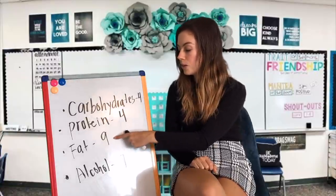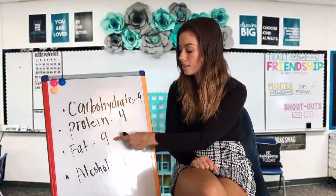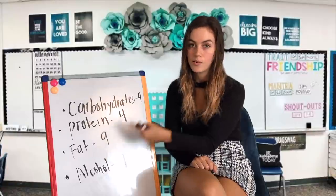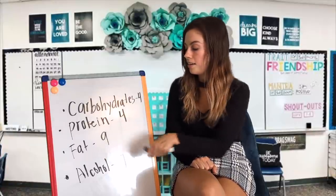For example, if I had 20 grams of carbohydrates, I would say 20 times 4, giving me a total of 80 calories. If I had 20 grams of fat, I would say 20 times 9, giving me 180 calories.